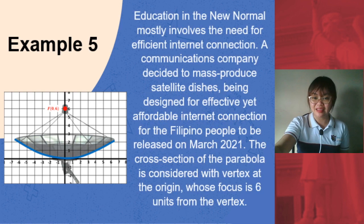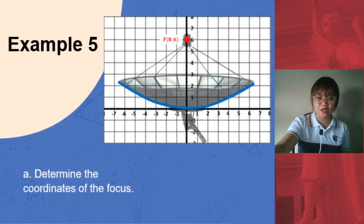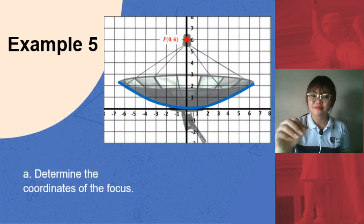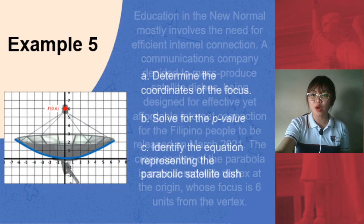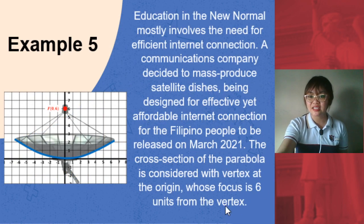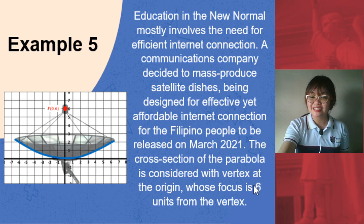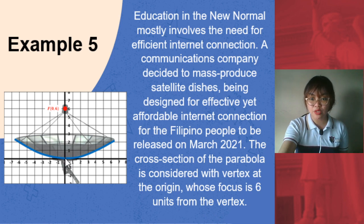With that, let us begin our solution. First, determine the coordinates of the focus. From the problem, it says that the focus is 6 units from the vertex, and the vertex is at the origin. Count 6 units from the vertex — and since the parabola is opening upward — we have that point as our focus.